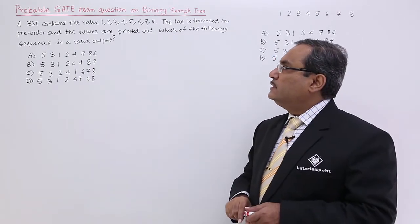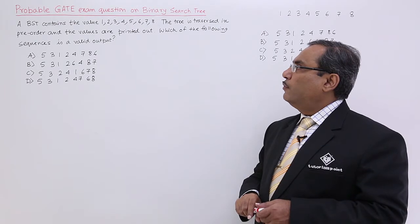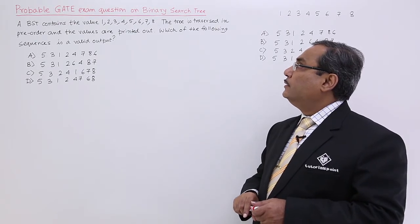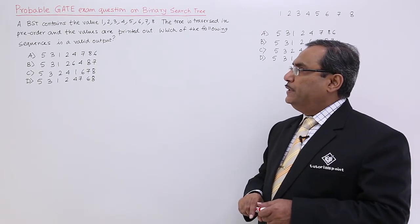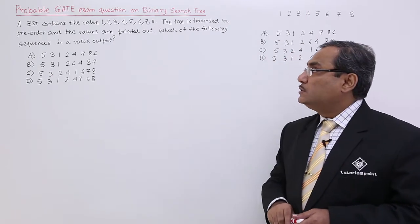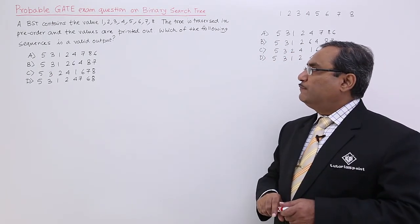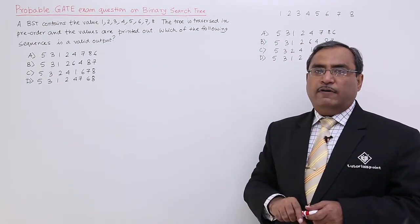A binary search tree contains the values 1, 2, 3, 4, 5, 6, 7, 8. The tree is traversed in pre-order and the values are printed out. Which of the following sequences is the valid output?